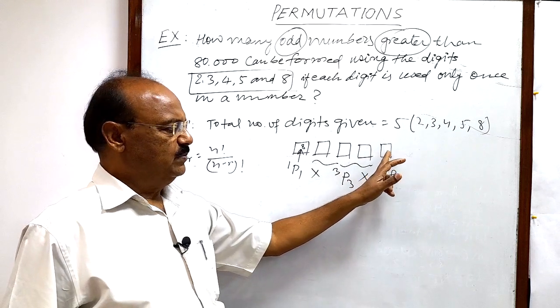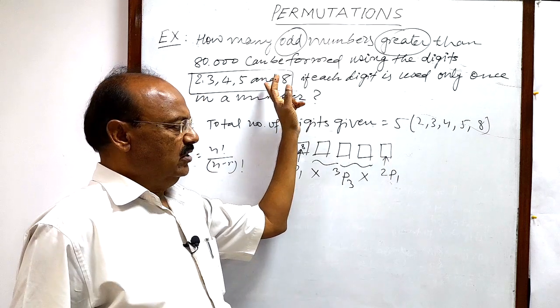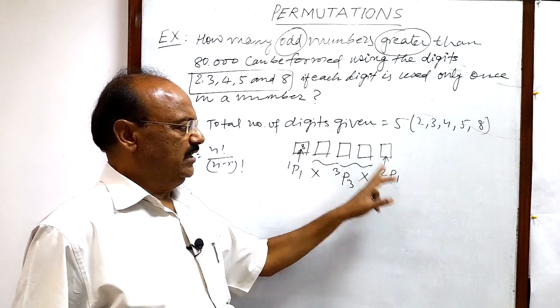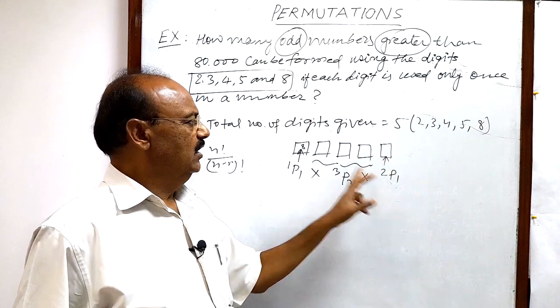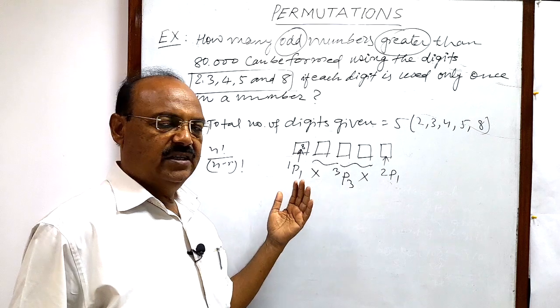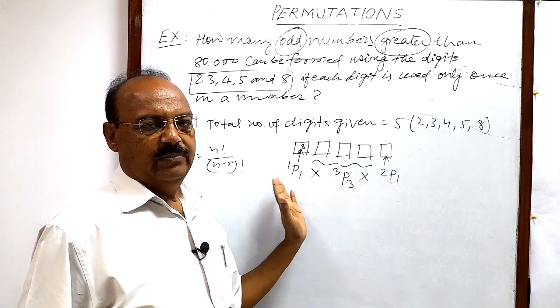I have given you a hint that you can write that this place can be filled in one way, in 1P1 way. This units place should be odd number here, so we are having two odd numbers can be selected in 2P1 way. Out of two, we have to select any one odd number, so 2P1 way. And these three places has to be filled with the help of remaining 3 digits in 3P3 ways. And total numbers will be multiplication of these three.